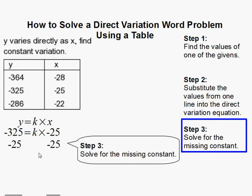And to do that, you need to divide both sides by negative 25, and that will get rid of the value next to k. And that gives me k is equal to 13, or 13 equals k. And that completes our problem.